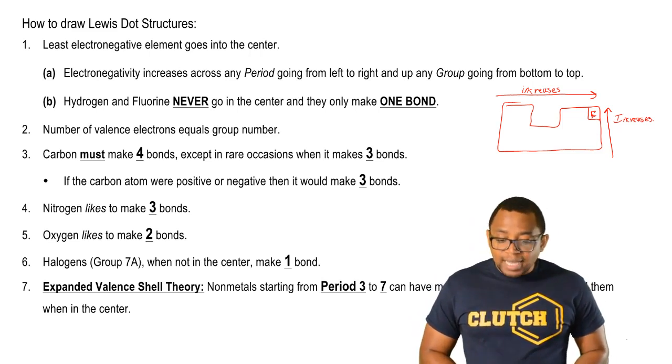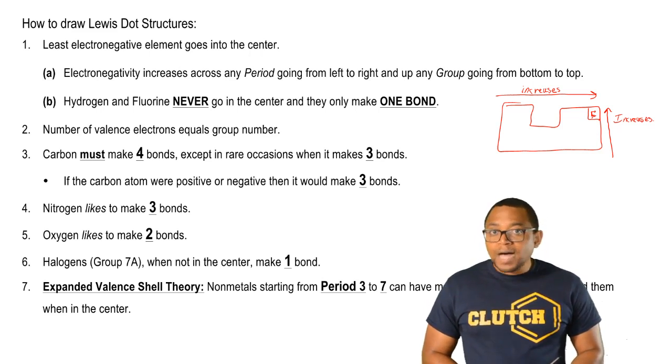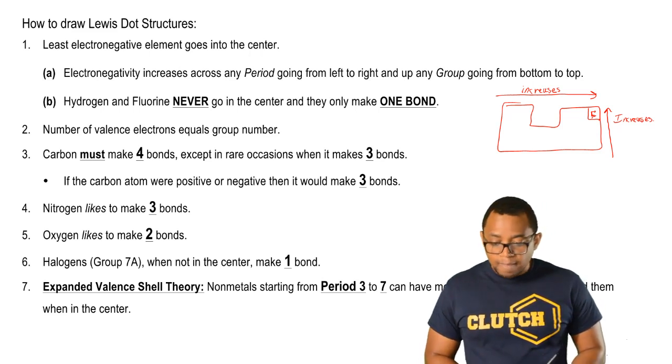Next, the number of valence electrons equals your group number. If you have an element in group 5A, it has five valence electrons. 7A, it has seven valence electrons.